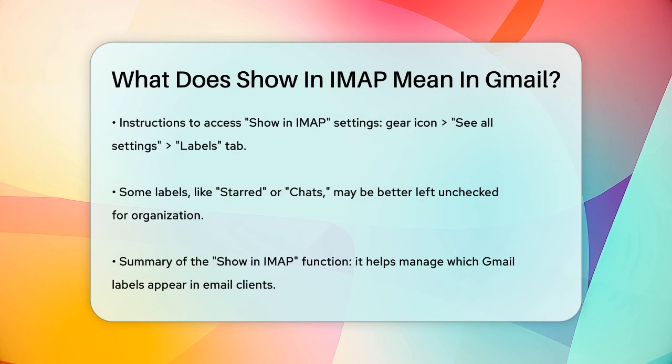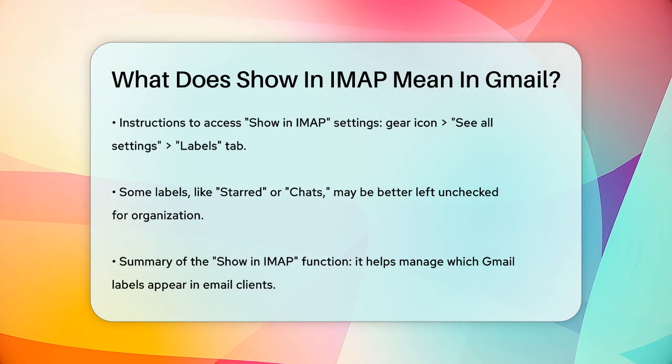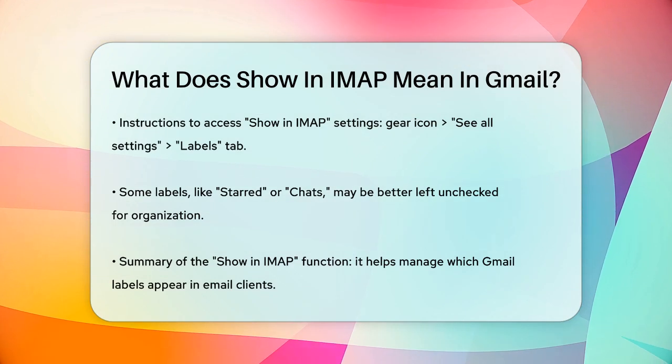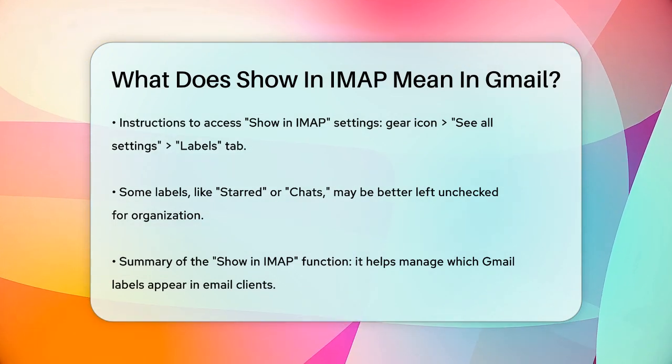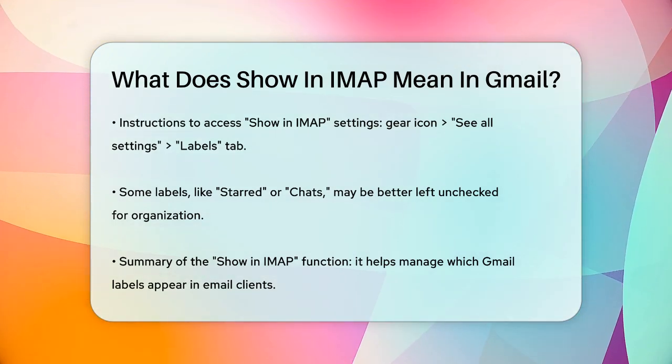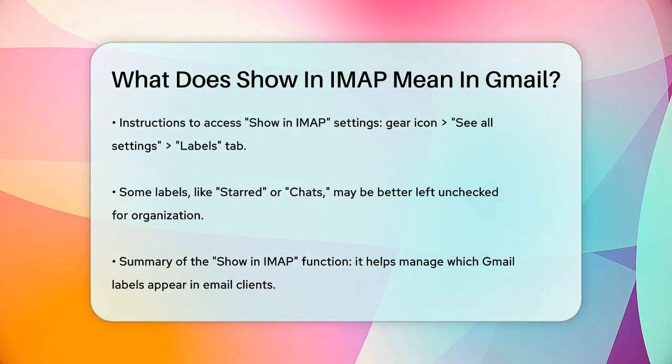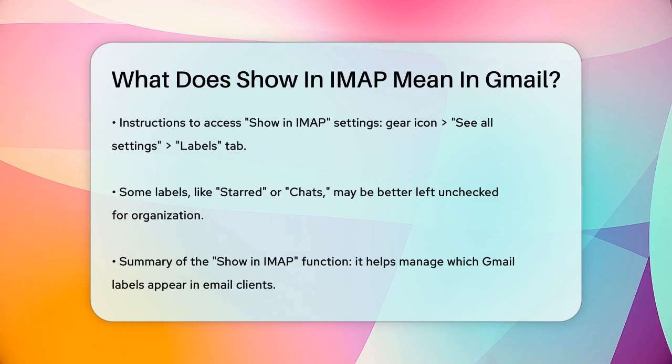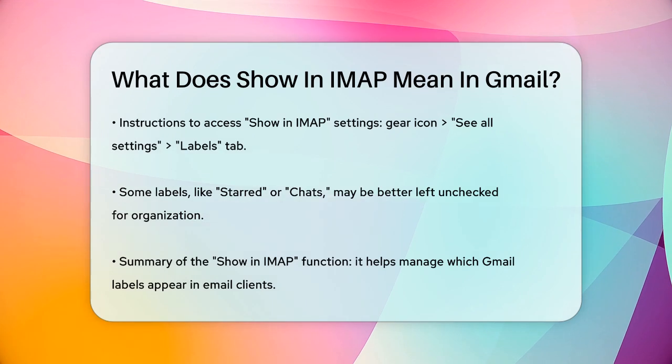So in short, Show in IMAP is your tool to control which Gmail labels appear as folders in your email client, making it easier to manage your emails across different platforms.